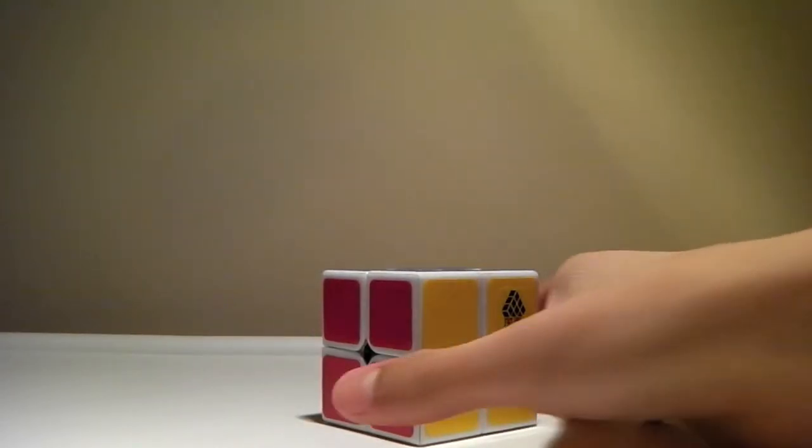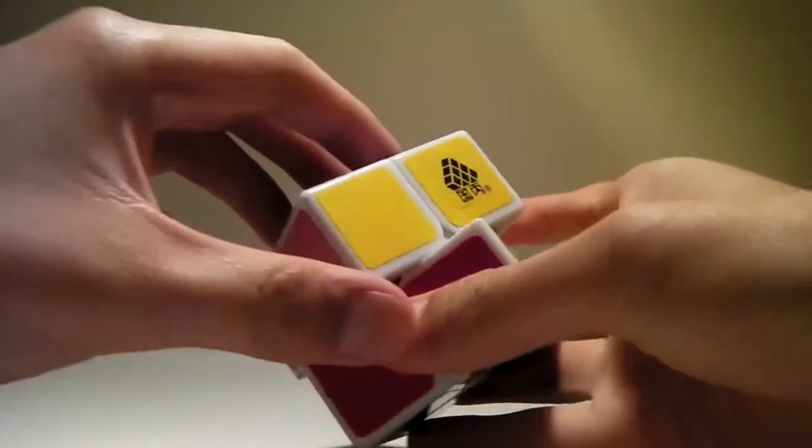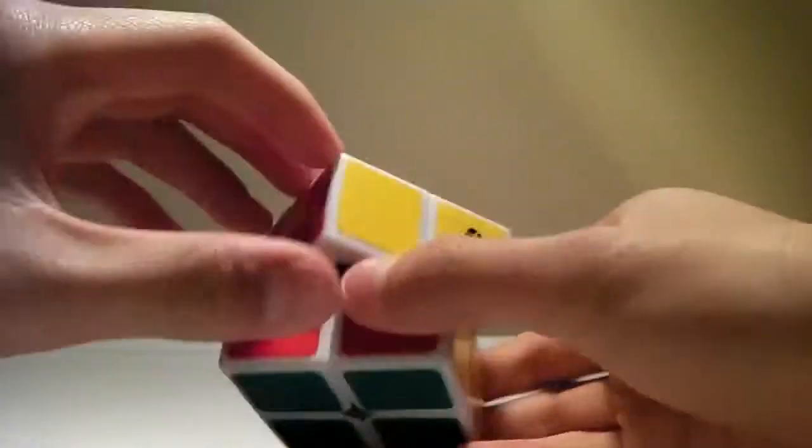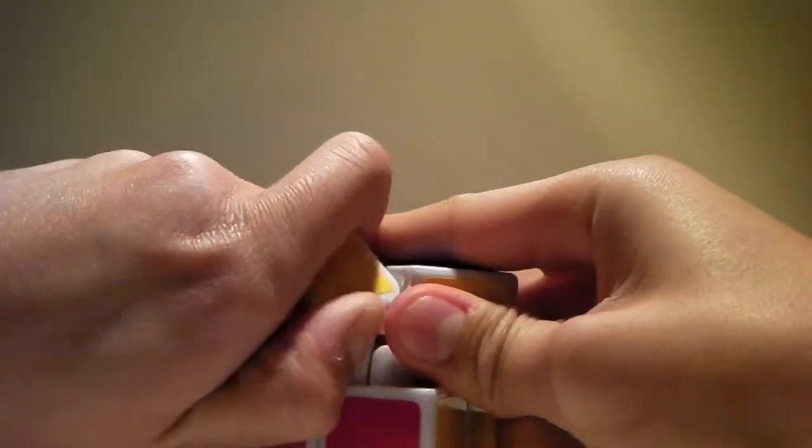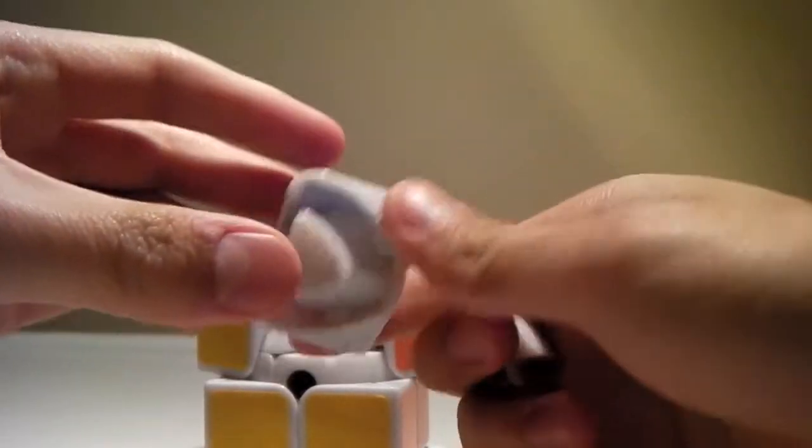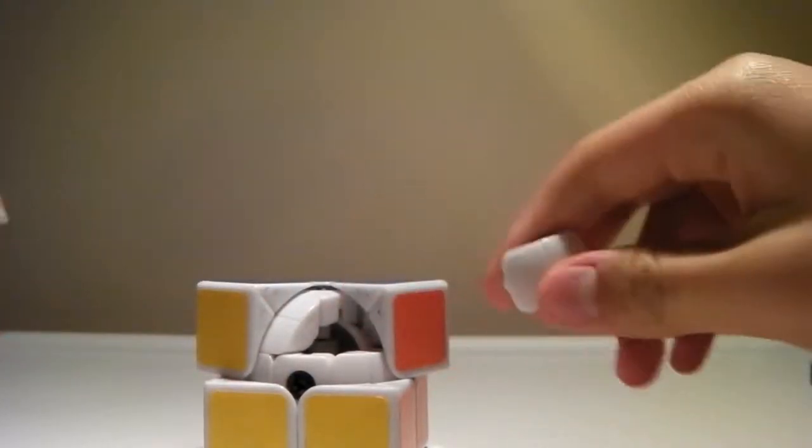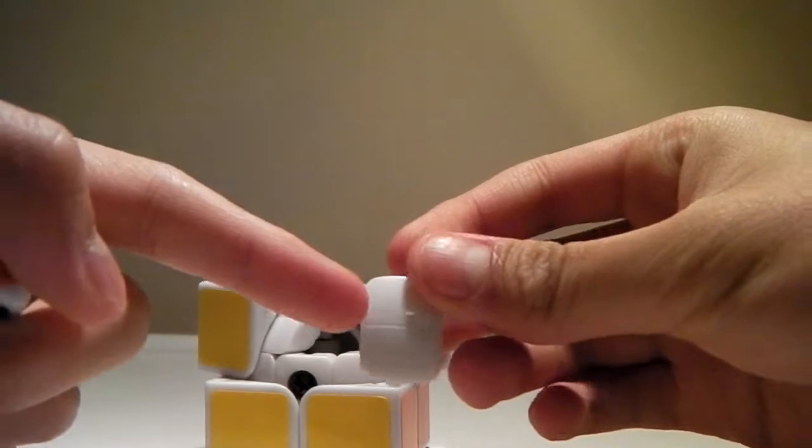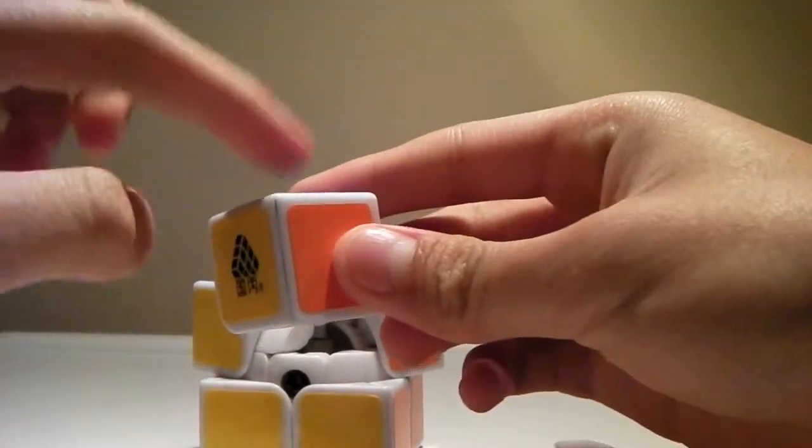Now, to disassemble this cube, turn the top layer 45 degrees and you twist the corner out. There are two main parts of this cube. First one is the internal piece. Second one is the corner piece.